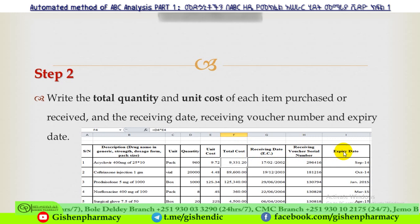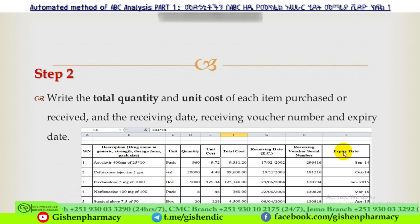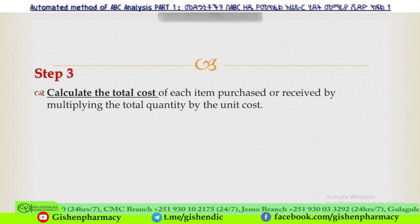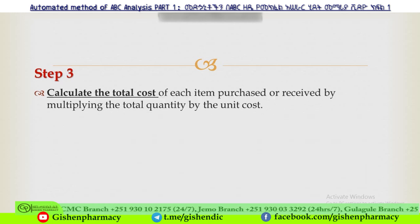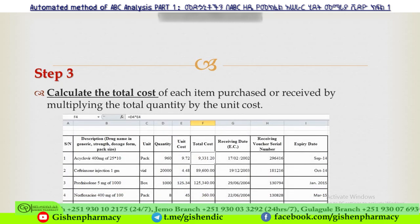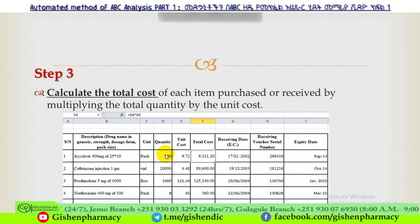As we go to the next step, we will use HC-MIS data export. HC-MIS is more preferable. Calculate the total cost of each item purchased or received by multiplying the total quantity by the unit cost.